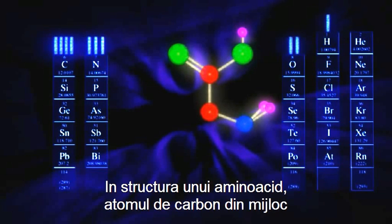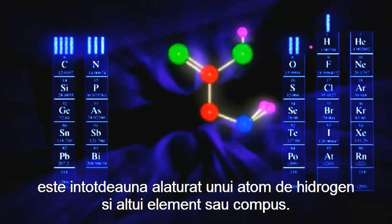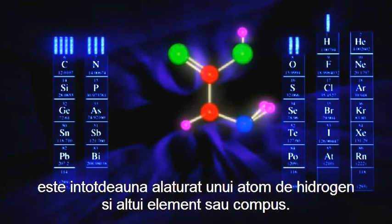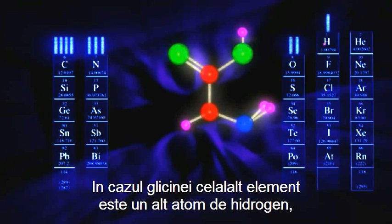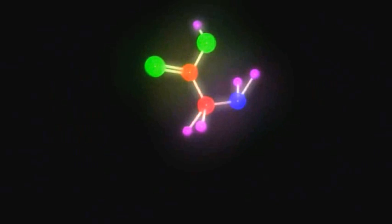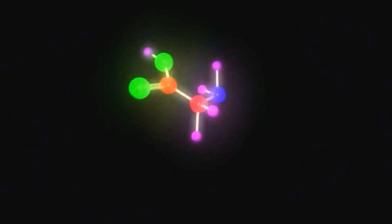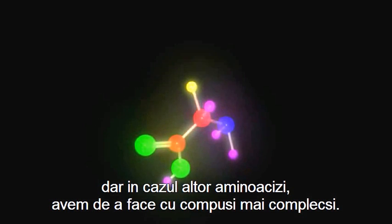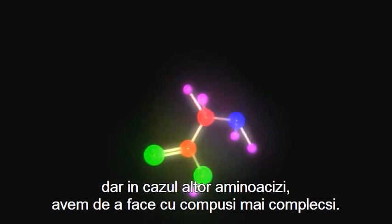In amino acids, the carbon in the middle is always attached to a hydrogen and something else. In glycine, the other side chain is just another hydrogen. But in other amino acids, the side chain is more complex.